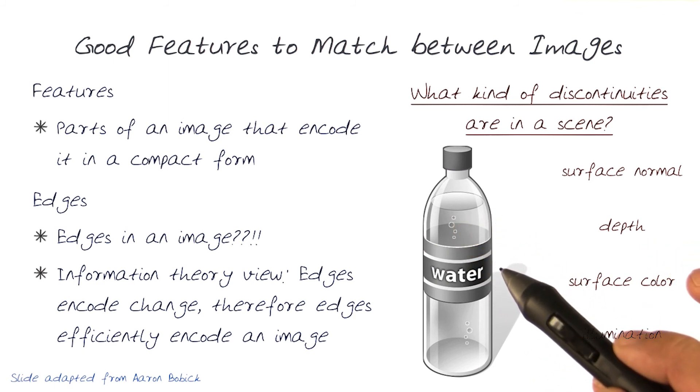And in fact, some may argue that this is a very important set of information about an image. In an information theoretic manner, edges are encoding change and therefore are an efficient way to encode an image. Anytime I think about an image, if I can start looking at where the changes are, that starts giving me a lot of information about what the image would be because I've taken a differential code to represent the image.